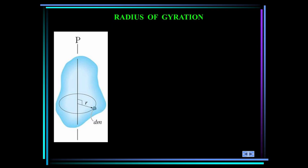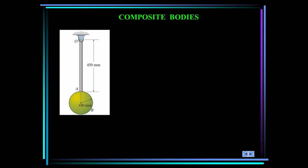Now we'll define the radius of gyration. The mass moment of inertia of a body about a specific axis can be defined using the radius of gyration, which we denote as k. The radius of gyration has units of length and is a measure of the distribution of the body's mass about the axis at which the moment of inertia is defined. The moment of inertia is equal to mass times the radius of gyration squared, so the radius of gyration is the square root of the mass moment of inertia divided by mass.